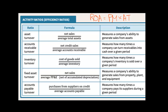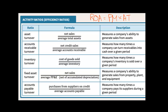We could take sales and divide it by our productive assets — property, plant, and equipment — and that gives us fixed asset turnover. Total assets include things like goodwill, and we don't necessarily expect goodwill to translate into increased sales. So we just want to look at the fixed assets and how good they are at generating sales.